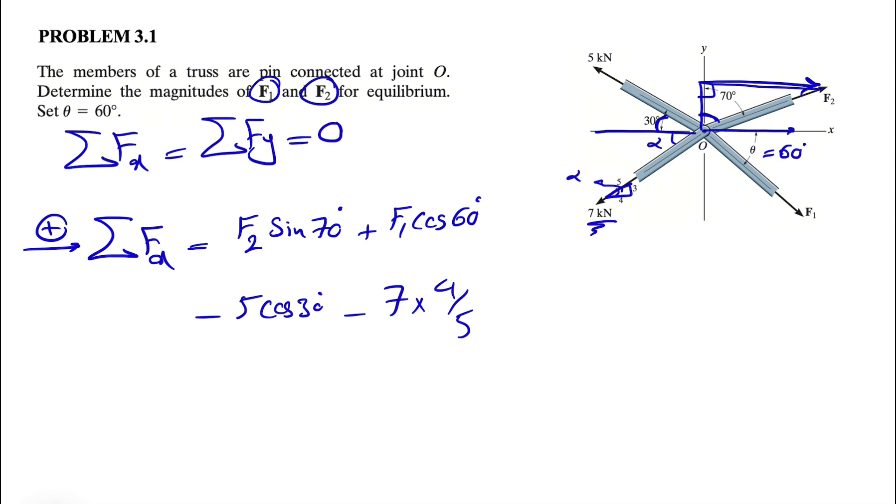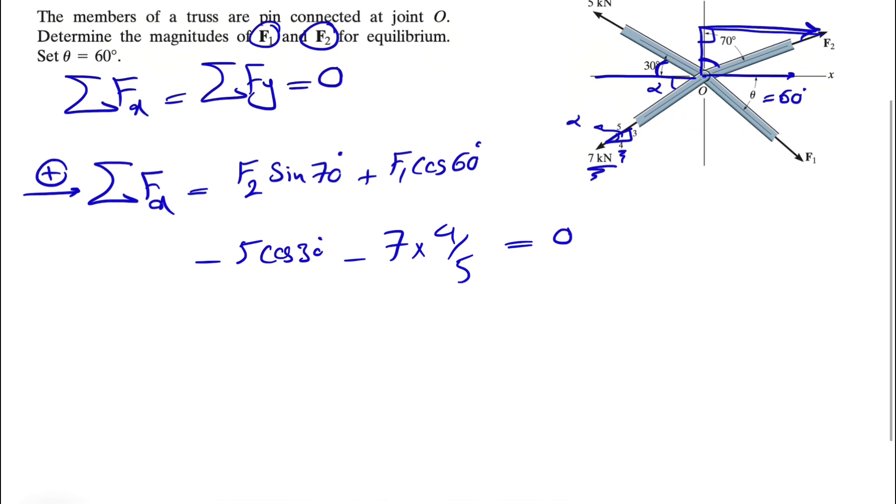So one quick easy way, if you're looking for the X component, find the horizontal side of that triangle and divide it by the hypotenuse. We'll do the vertical component for the Y component. This will be equal to 0.